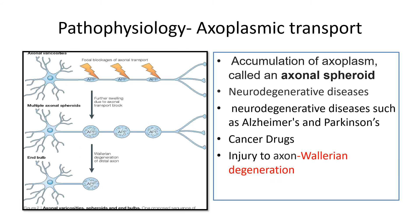When axoplasmic transport is interrupted or dysfunctional, there is an accumulation of axoplasm in the neuron, known as axonal swellings. This damage may be linked to trauma, ischemia, infection, or neurodegeneration. Neurodegenerative diseases such as Alzheimer's and Parkinsonism are linked to axoplasmic transport dysfunction due to genetic mutations in microtubules. Similarly, cancer cells that disrupt microtubules affect axoplasmic transport and result in neuronal degeneration. An injury to the axon results in Wallerian degeneration.